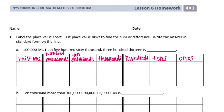Now that we have it labeled, I'm going to put in what we have: 560,313. I'm going to put that in our place value chart. So we have 5 hundred-thousands, 6 ten-thousands, no thousands, 3 hundreds, 1 ten, and 3 ones.